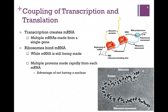There is a coupling of transcription and translation that occurs in prokaryotic systems that is not possible in eukaryotes. Remember, prokaryotes lack a nucleus, and so both of these processes occur in the cytoplasm. Transcription creates mRNA, and multiple mRNAs can be made from a single gene. And as soon as the ribosome binding site is available on the message, a ribosome can bind, even while the message is still being made.